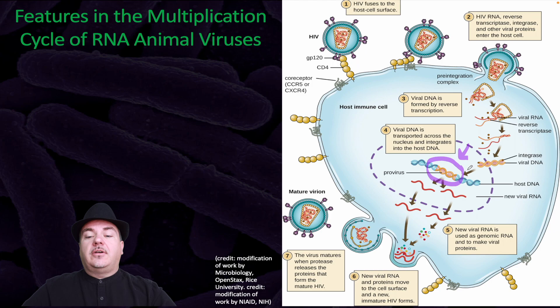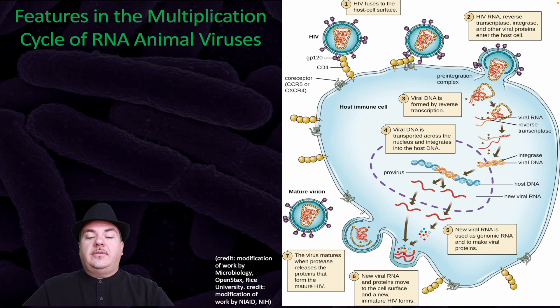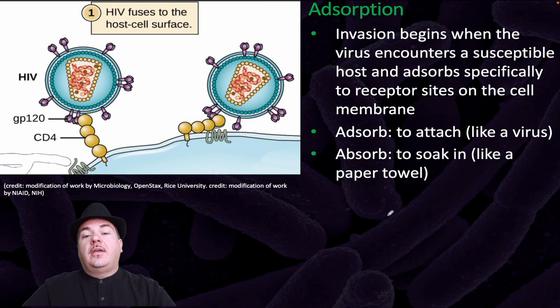New viral RNA is then used as genomic RNA and to make viral proteins. New viral RNA and proteins move to the cell surface and a new immature HIV forms. The virus matures when protease releases the proteins that form the mature HIV.